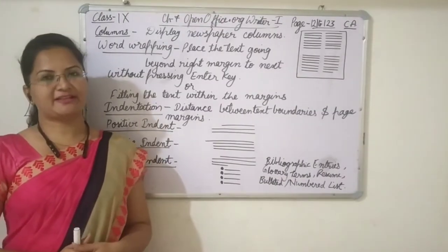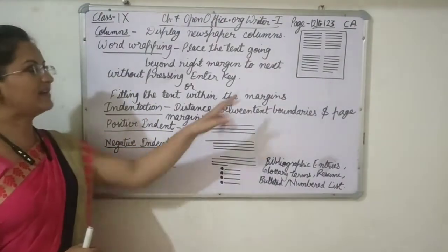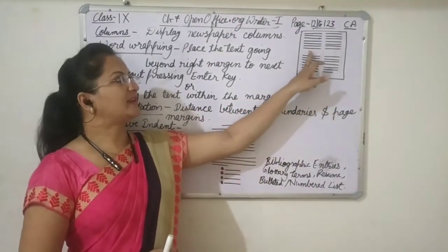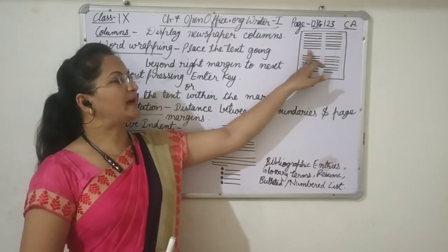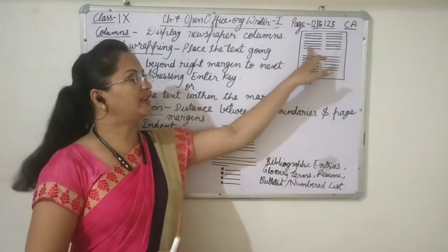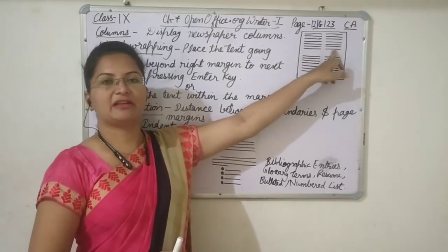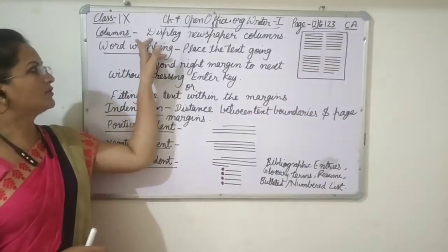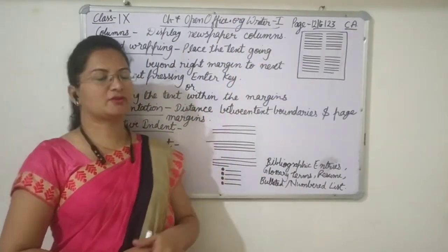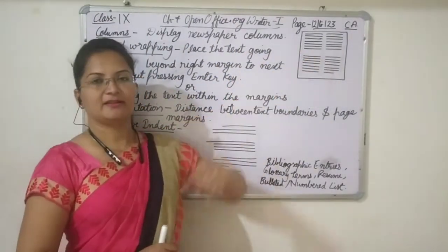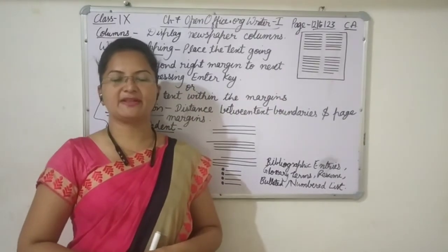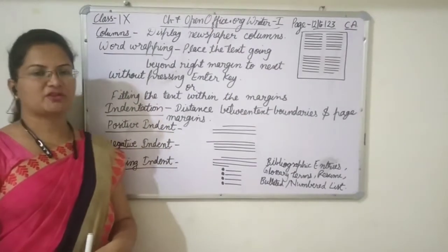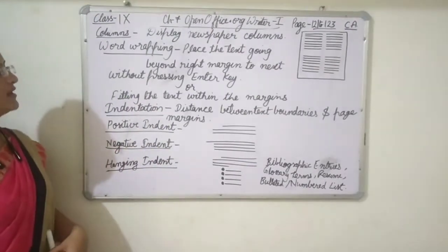Now we will discuss about columns. You might have seen this type of text arrangement in newspapers. The paragraph will automatically arrange in the next column. In a single page, we can have many columns according to the requirement. Columns display newspaper-like columns. If you want columns like those in newspapers or magazines, we can simply select the text, click on the Columns option, and then choose the number of columns.